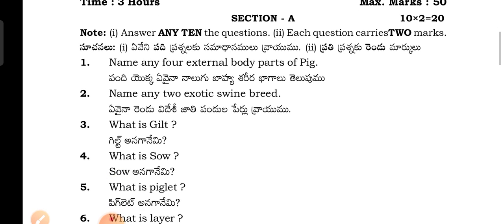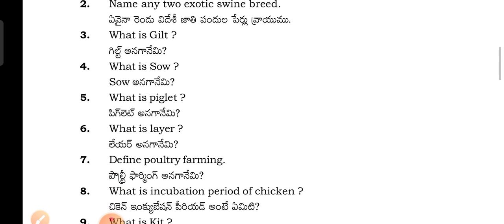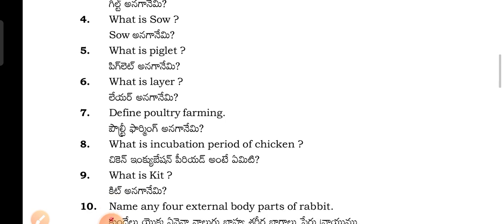Name any four external body parts of the pig. Name any two exotic swine breeds. What is gilt? What is sow? What is piglet?